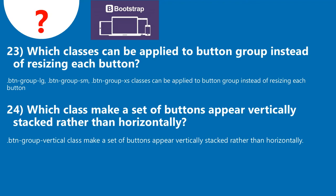Question 24: Which class makes a set of buttons appear vertically stacked rather than horizontally? The .btn-group-vertical class makes a set of buttons appear vertically stacked rather than horizontally.